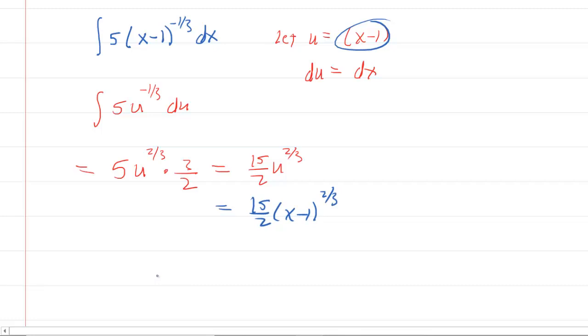And now we can actually put the bounds back on as well. So let's return to the original problem. We're going to do the limit as t approaches 1 from the left of this 15 halves x minus 1 raised to the power of 2 thirds, evaluated from 0 to t.